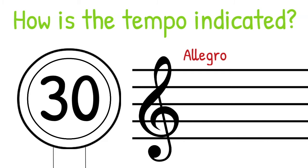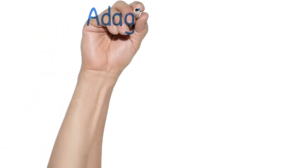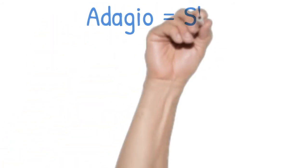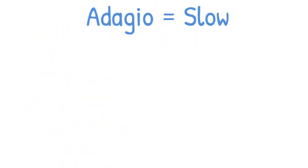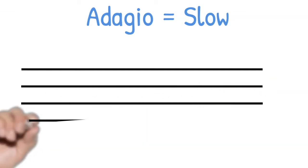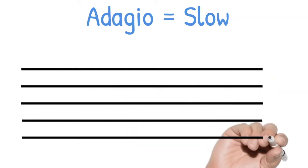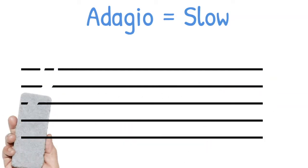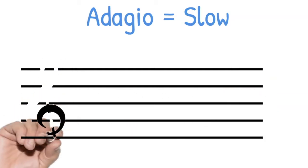Let's look at some of the most common terms. Starting with one of the slowest tempos: adagio, which literally means 'at ease.' This indicates the music should be played slowly.